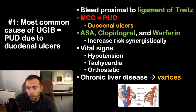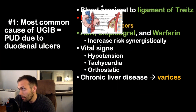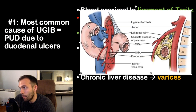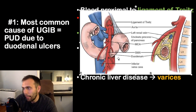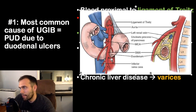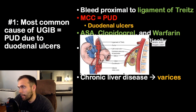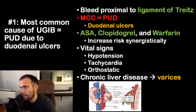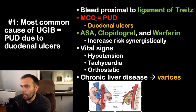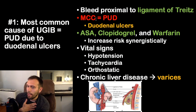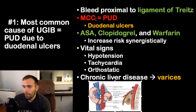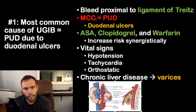Fact one: the most common cause of upper GI bleeds is peptic ulcer disease due to duodenal ulcers. Upper GI bleeds are those occurring proximal to the ligament of Treitz, which attaches to the duodenum. Between the proximal and distal duodenum is the superior mesenteric artery, which can compress the duodenum against the aorta, leading to superior mesenteric artery syndrome.